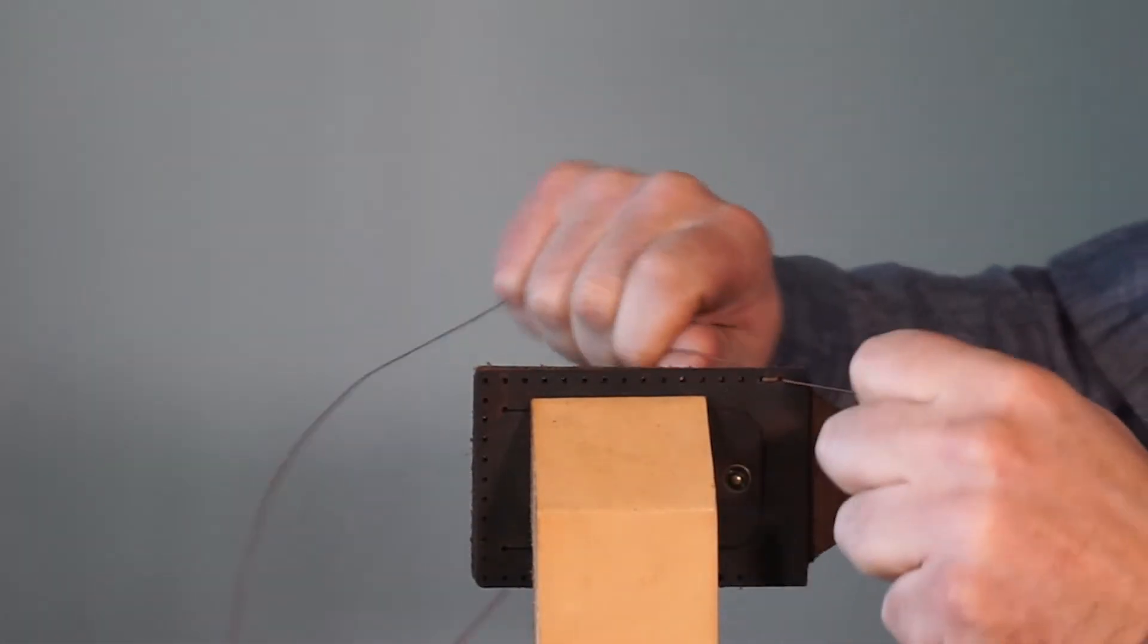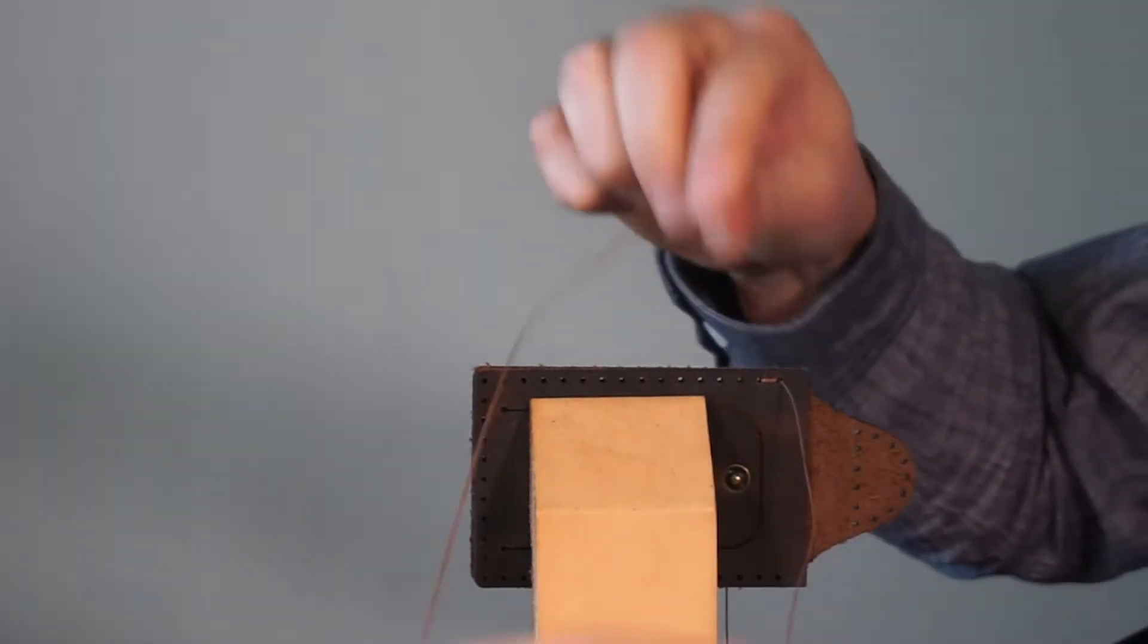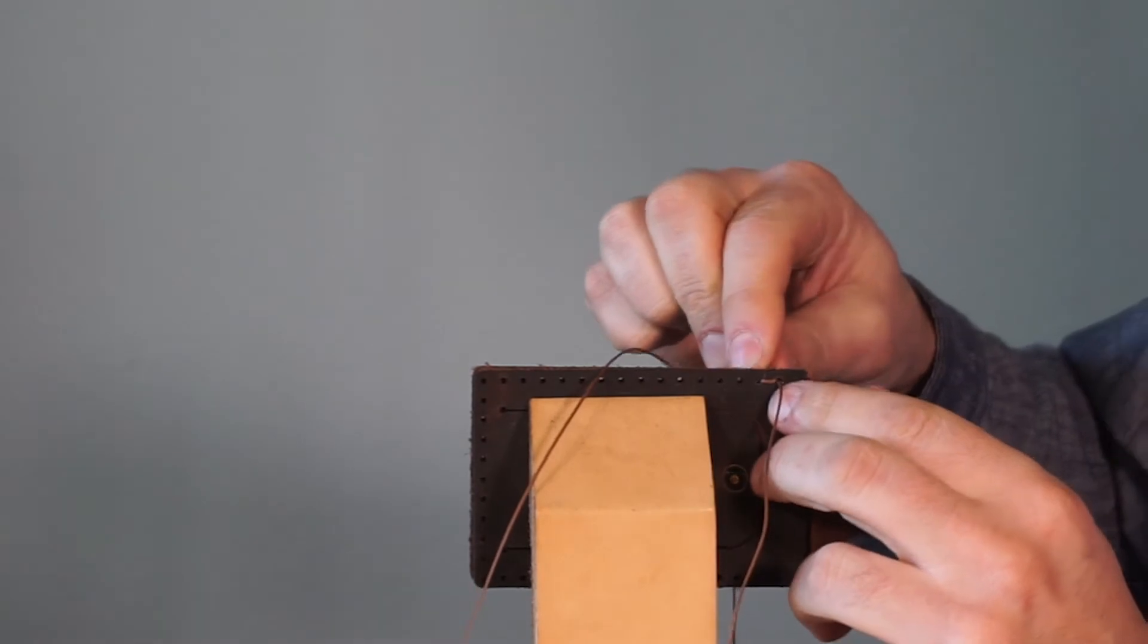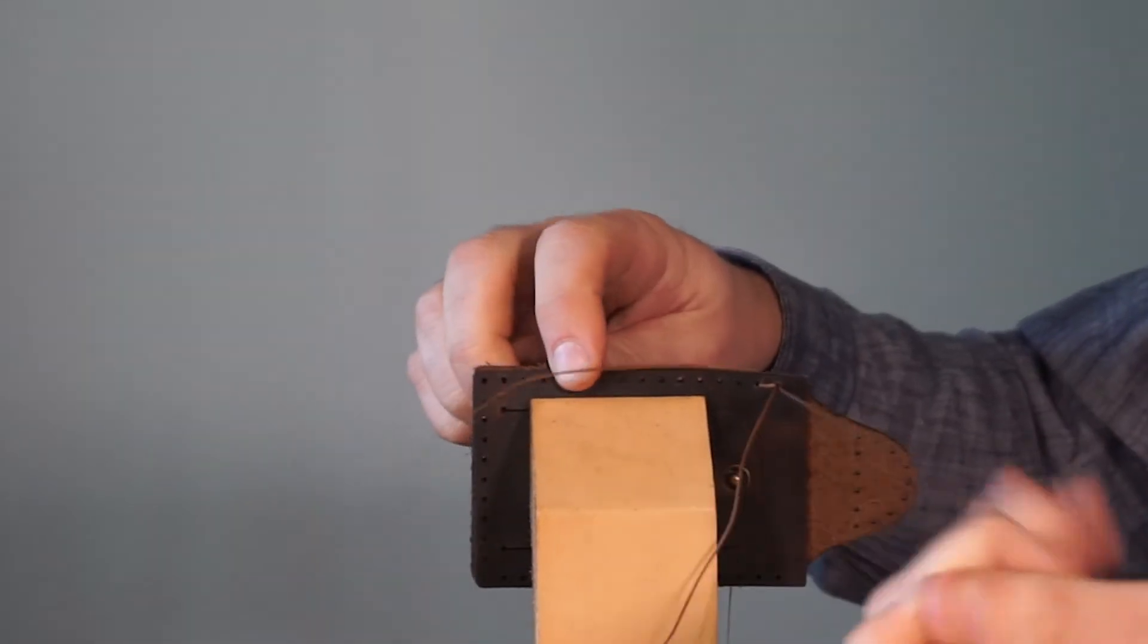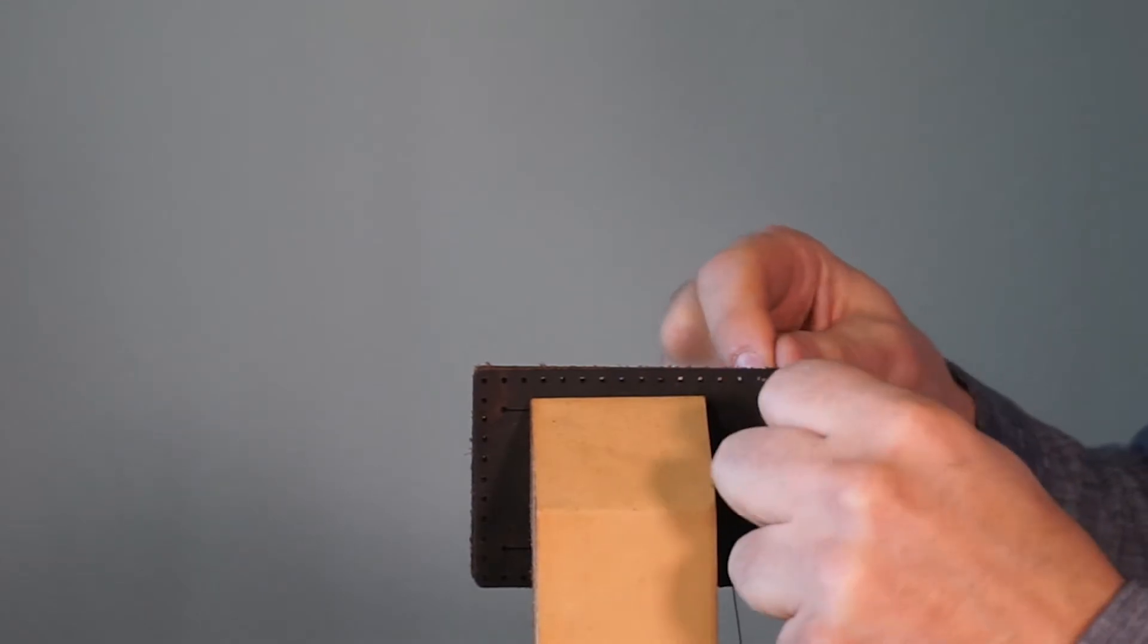This is a good time to check again to make sure your thread links are still nice and even and adjust as necessary. Now take just your top thread and do a loop stitch around the outside of the piece to reinforce the top. And now your needle should be back where they started.